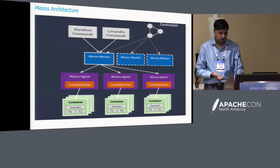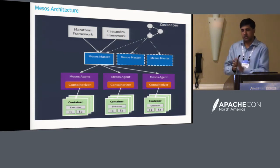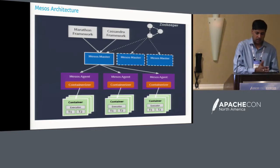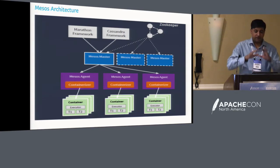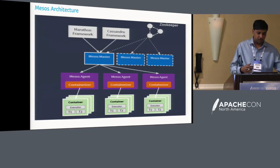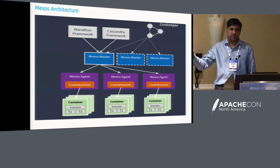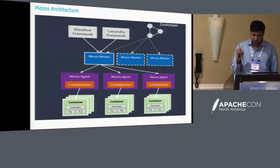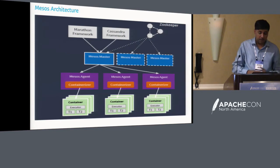A recap of the Mesos architecture: it's a cluster manager with master and worker models. The Mesos master has a primary master with others in a passive standby. There are different frameworks — Marathon for services, Aurora, Cassandra frameworks, Kafka frameworks. The Mesos agent runs on all hosts where your actual workload runs. Mesos agents have a concept of a containerizer, which is Mesos' definition of a container. The executor is your task lifecycle manager — tasks could be Docker containers, KVM, unikernels, or POSIX processes.